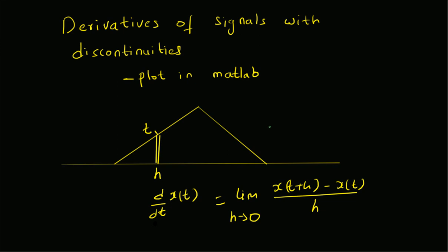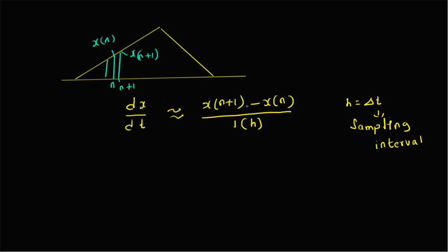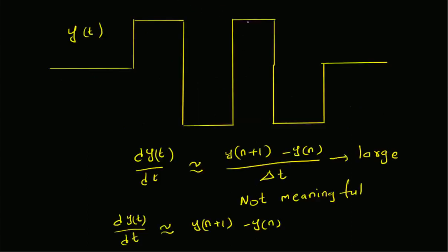To summarize: for a continuous signal it is easy to find the derivative using a discrete approximation. Starting from the original definition of the derivative, we approximate using discrete values as the ratio of the difference between two consecutive values divided by the sampling interval. This gives a good approximate derivative.